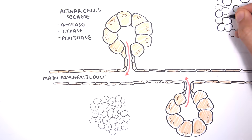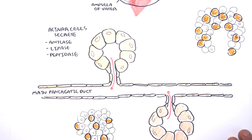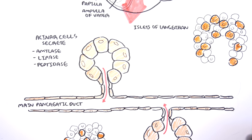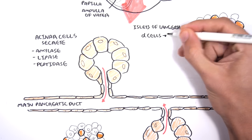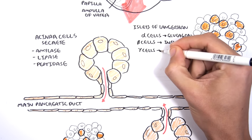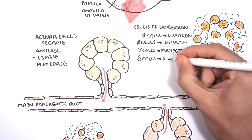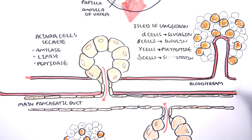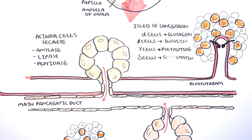The islets of Langerhans sit around the acinar cells and form the endocrine function of the pancreas. There are several cell types: alpha cells secrete glucagon, beta cells produce insulin, gamma cells produce polypeptides, and delta cells produce somatostatin. After eating, insulin produced by the beta cells helps store the energy we have consumed.